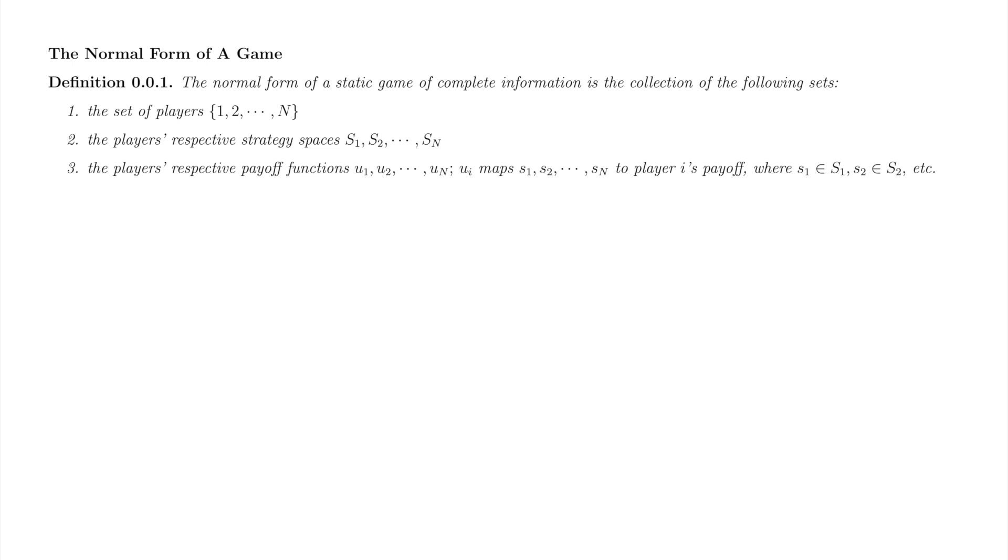Let's use letter i to represent a player, so that i can take any value in the set of players. Big S sub i denotes player i's strategy space, and we use little s sub i to denote a particular strategy in player i's strategy space. We notate players and their strategy spaces as sets. Suppose we select a single strategy from each strategy space, notated in item 3 by little s1, little s2, dot dot dot, little s sub big n. We call these strategies, all taken together, a strategy profile.